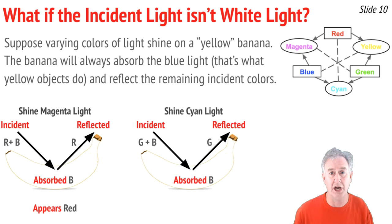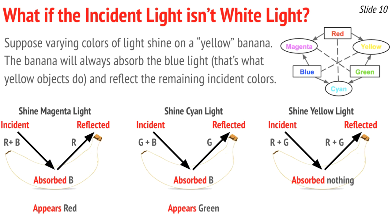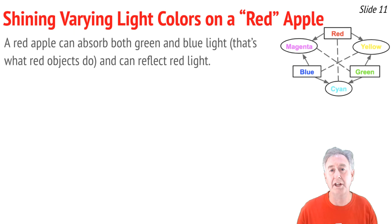Now let's take cyan light and shine it on the yellow banana. Cyan light is green and blue. When it shines on the banana, the blue gets absorbed and taken away. There's only one color left to be reflected — green — so the banana looks green. Finally, let's shine yellow light on the banana. Yellow light is red plus green, shining on a banana that can only absorb blue if blue is present. So red and green both get reflected, and the banana looks yellow.